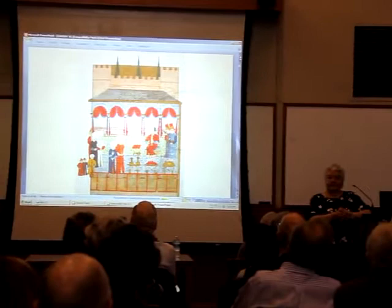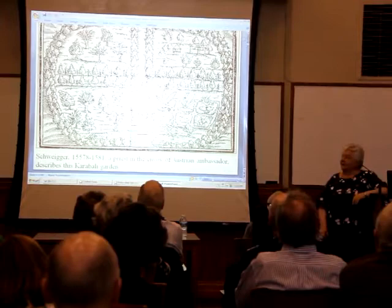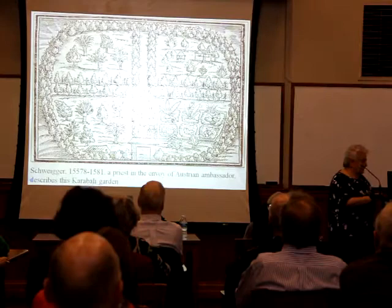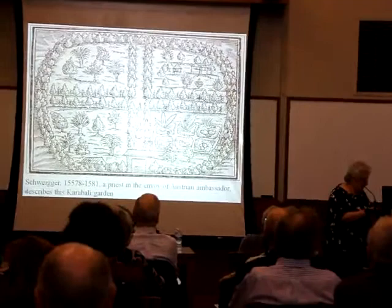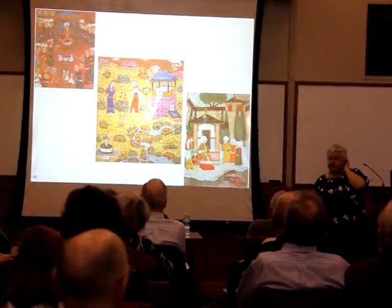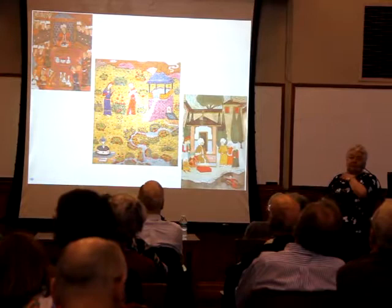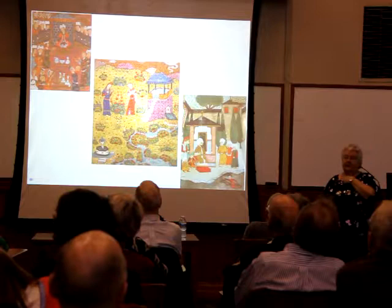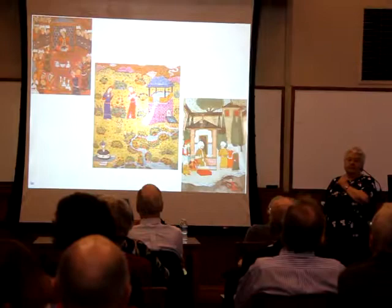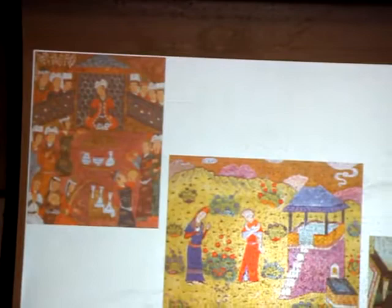I go back to the miniature paintings to see how they look. I'm now introducing three miniature paintings. The one at the top on your left is from the time of Mehmet II, that is the 15th century. What we see in this is a garden where a prince is sitting in a little pavilion, and the inside of the pavilion is covered with tiles.